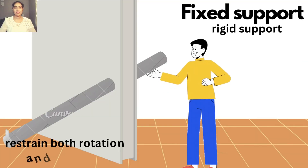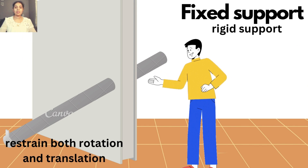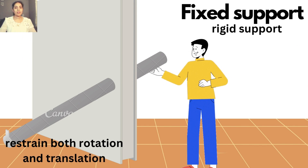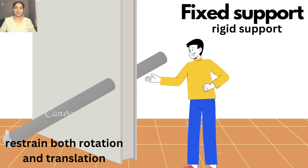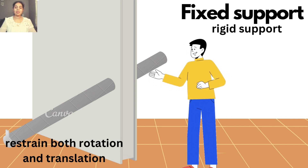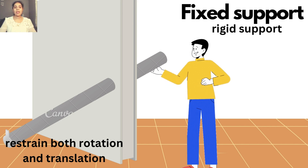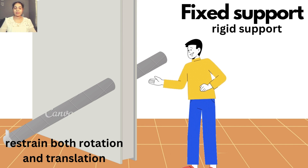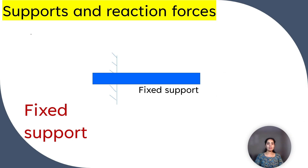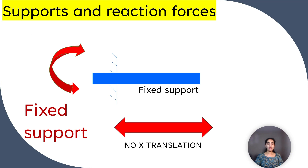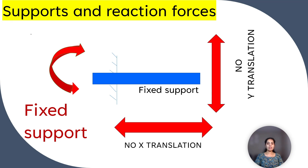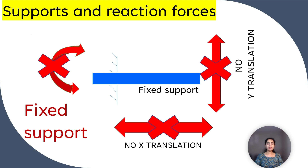Fixed supports restrain both rotation and translation and are also known as rigid supports. A pole set into concrete is a good example of a fixed support. Fixed supports resist moment, horizontal translation, and vertical translation.